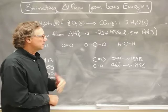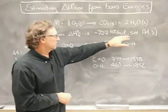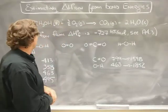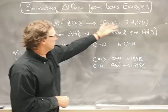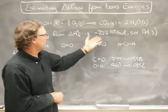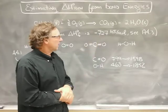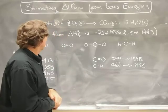Now, this is an estimate. The correct way to do this is to use table A4.3 to look up the enthalpies of formation of the products and reactants and take that difference. When you do that, I get minus 727 kilojoules per mole. It's a highly exothermic reaction.